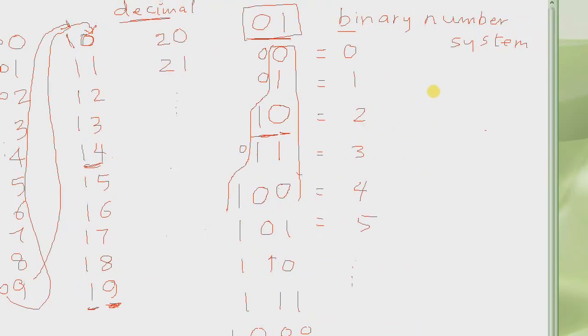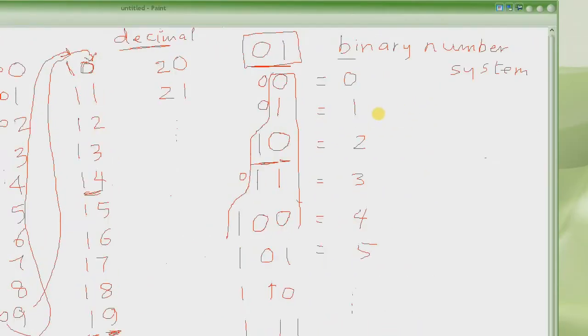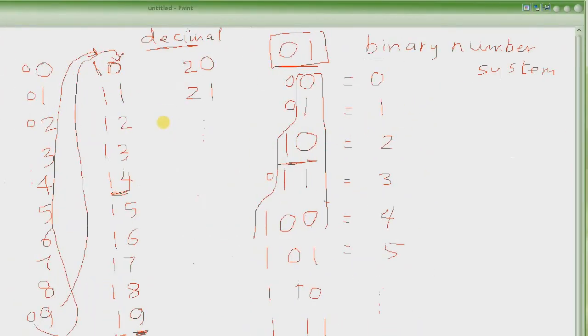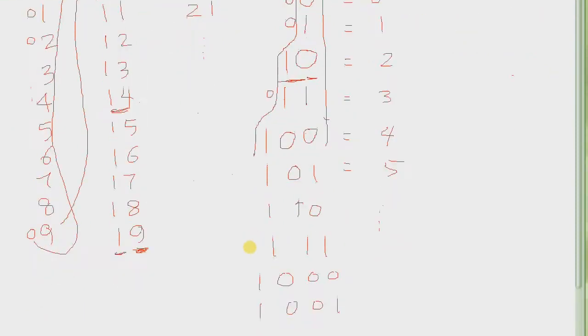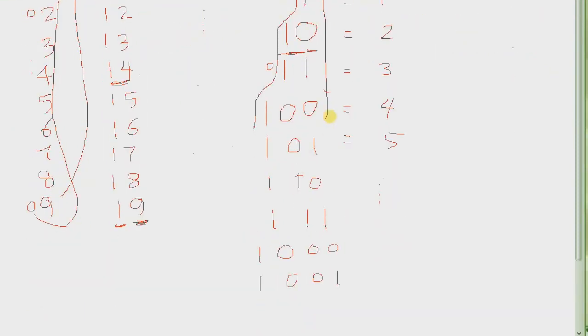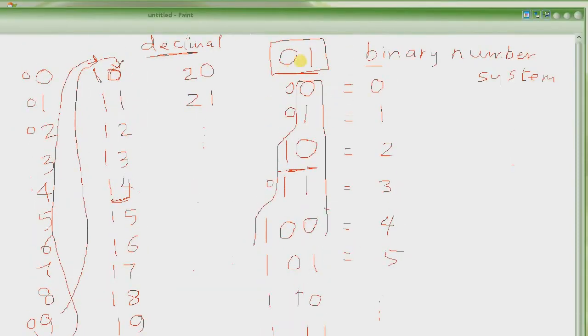What we were discussing here was the Binary Number System and how we can write any number we want in this number system with only 2 digits: 0 and 1.